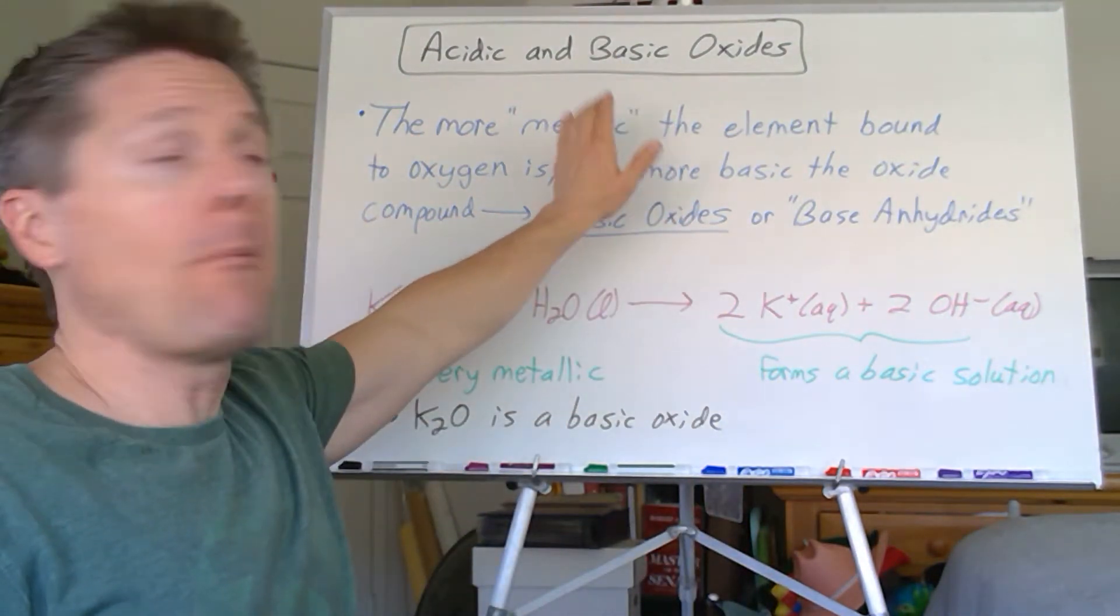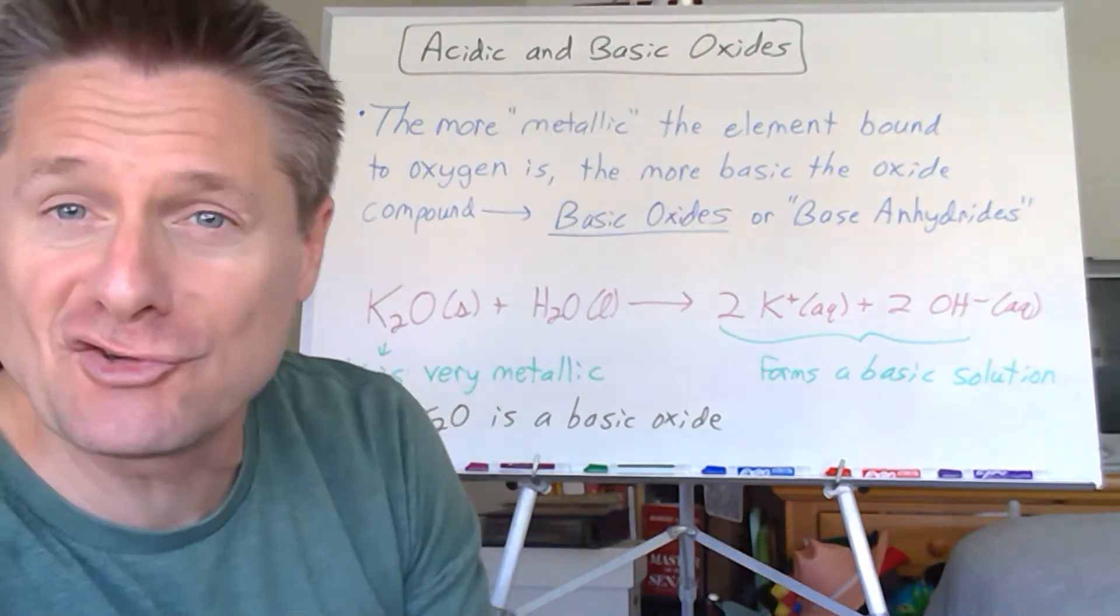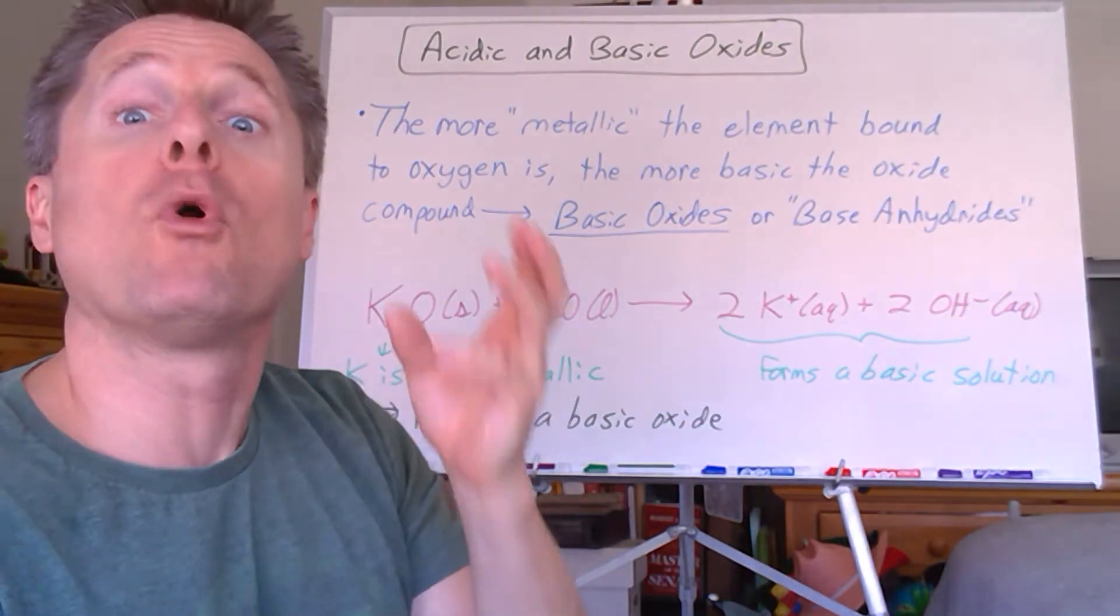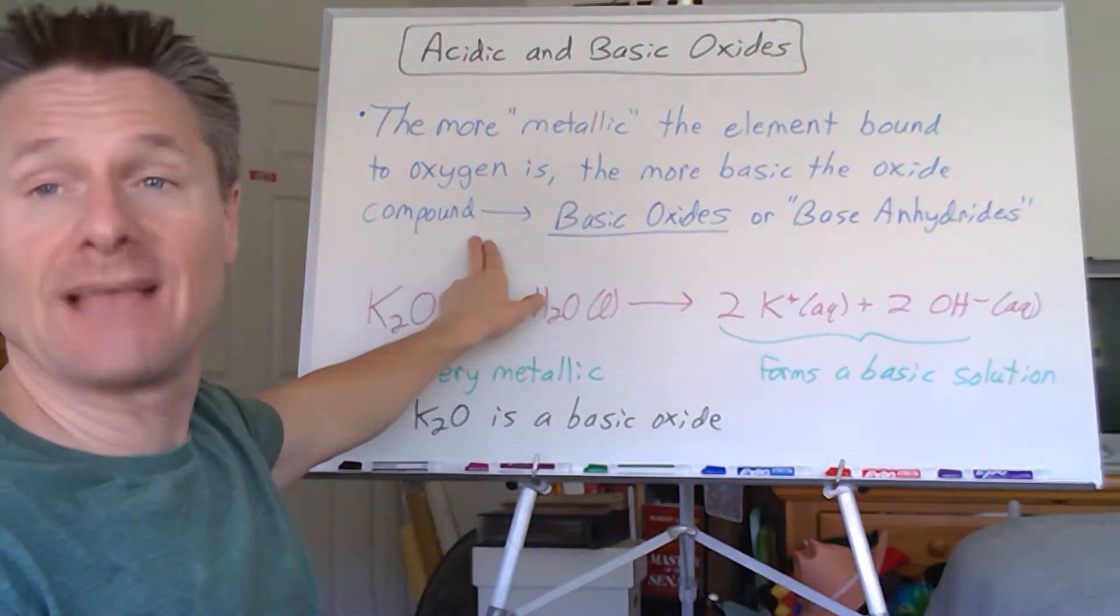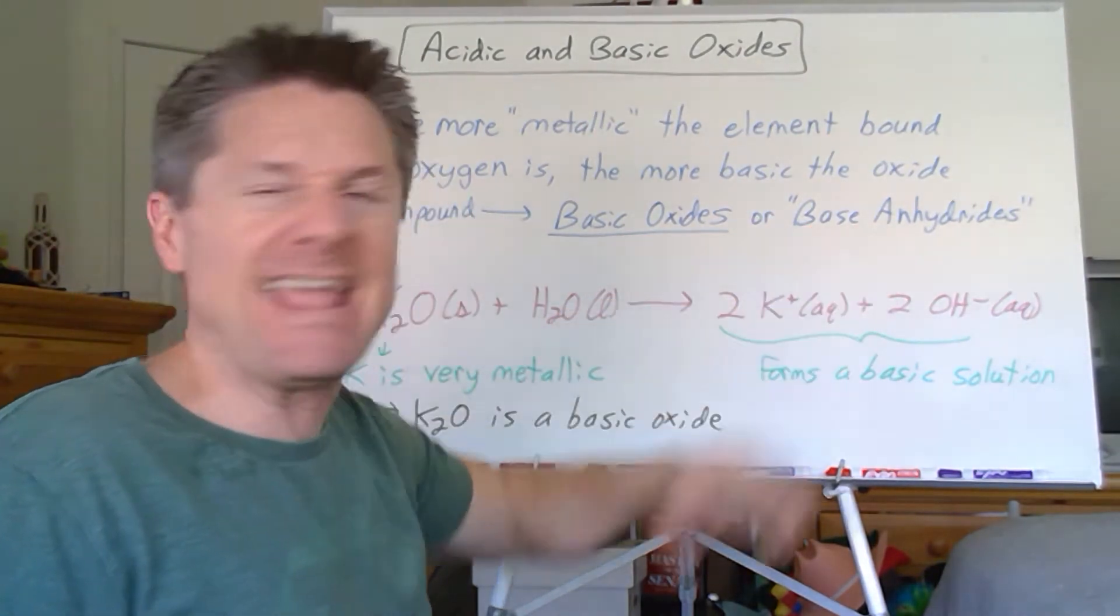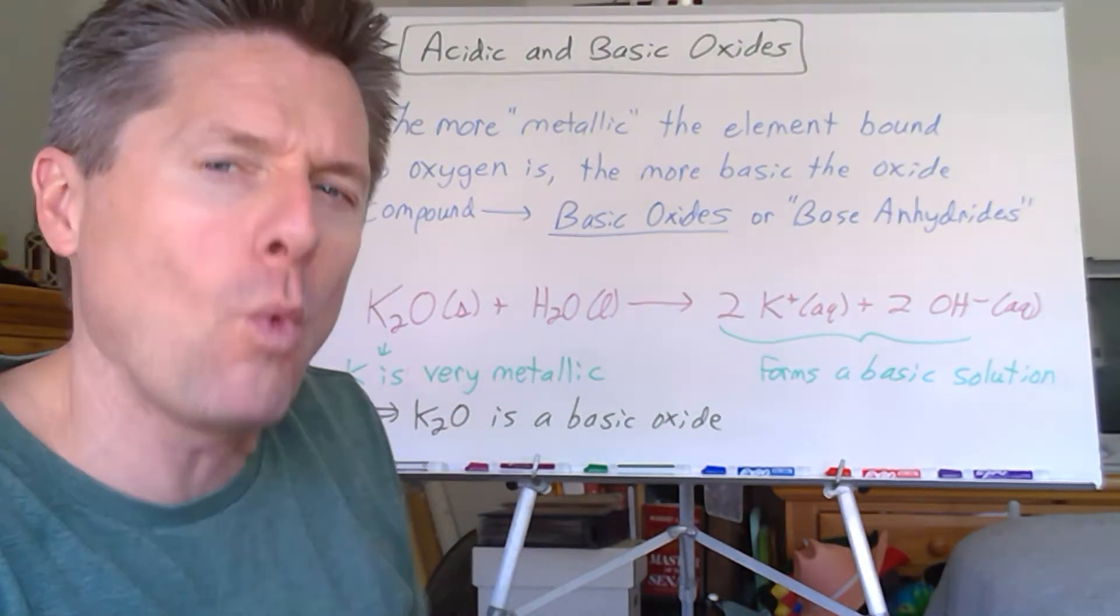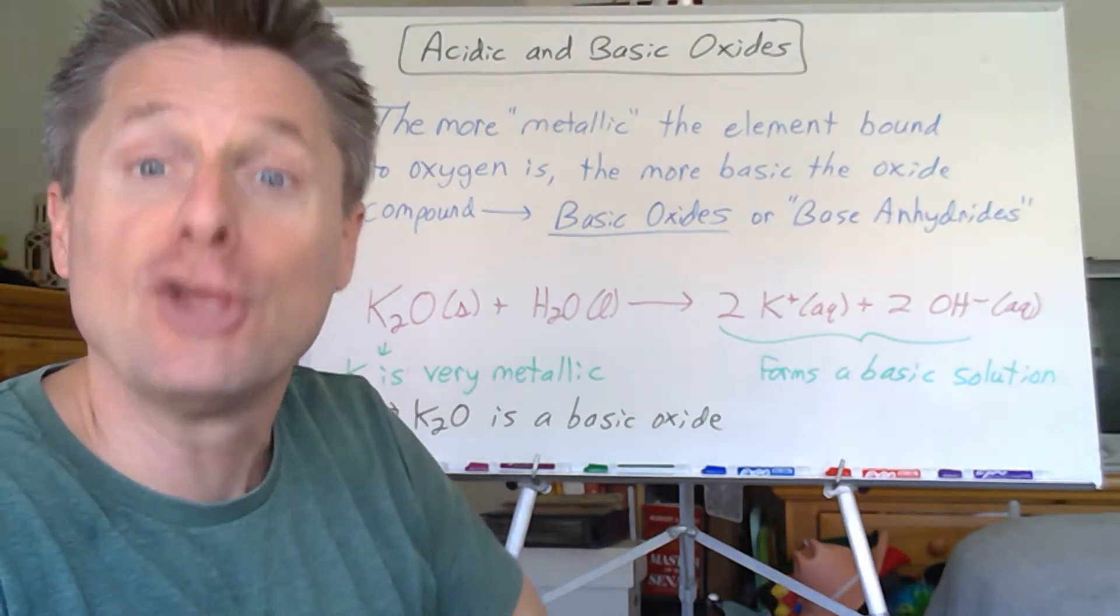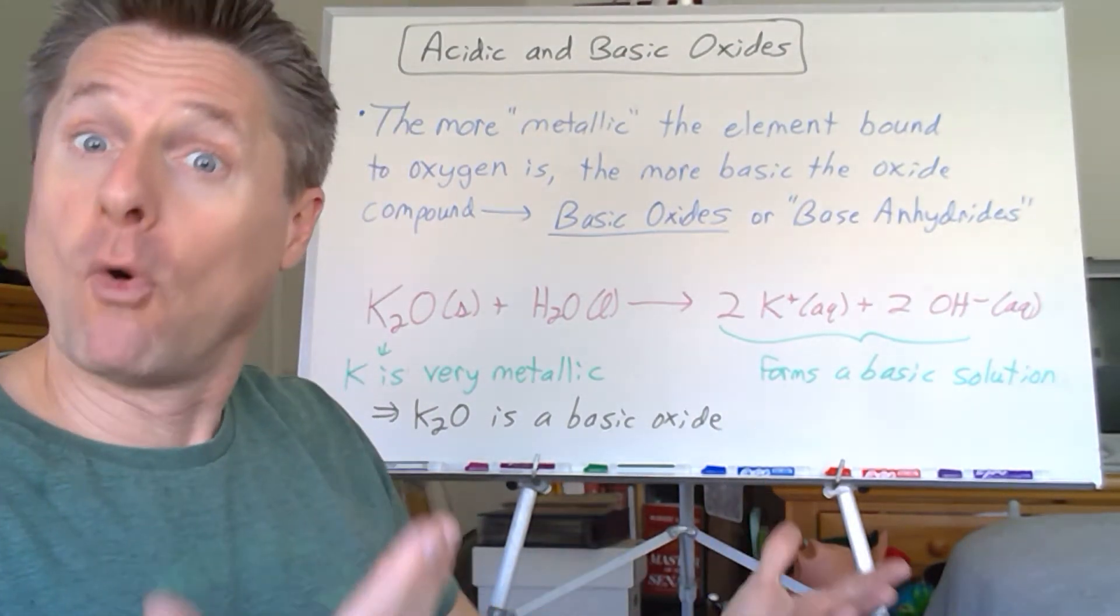It turns out the more metallic the non-oxygen element is, the more basic the oxide compound is. We call them basic oxides. Some people call them base anhydrides because you haven't put them in water yet. But when you put them in water, you get a basic solution.